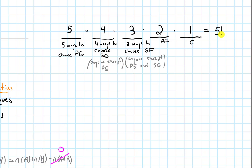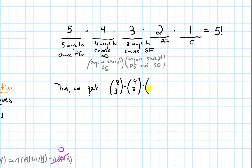Overall for case 1, we get 8 choose 3 times 4 choose 2 times 5 factorial. We multiply all these values together because these were all steps of the same process within this case of 3 returners and 2 new members: picking the 3 returners, picking the 2 new members, and then deciding their positions.